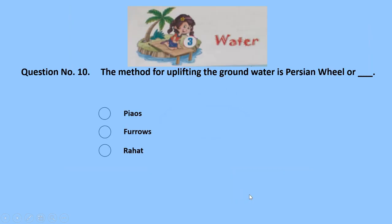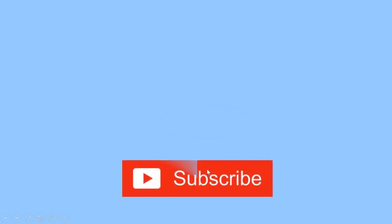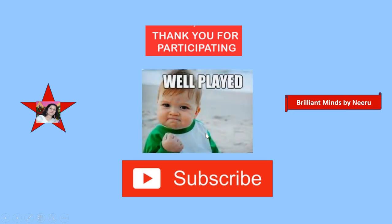This is the last question of this quiz: the method for uplifting groundwater is the Persian wheel — what is the other name of the Persian wheel? Is it piaws, furrows, or rahat? Furrows — wrong. Rahat — correct! Persian wheel is also called rahat. The quiz is over here. You really played very well — keep watching the videos and subscribe to the channel!